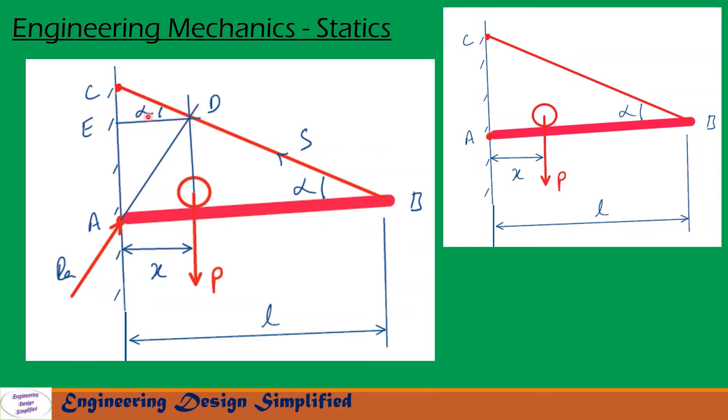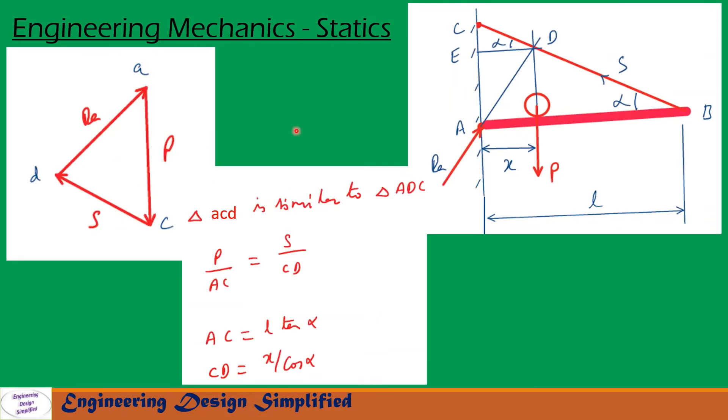Now let us see this angle: since this angle is alpha, this angle must also be alpha. Now let us draw the force triangle. To draw force triangle, an arrow parallel to P is drawn from A to C. Another arrow parallel to S is drawn from C to D. From the end of S there is another arrow drawn parallel to RA. So all these three arrows form a triangle A, C, D.